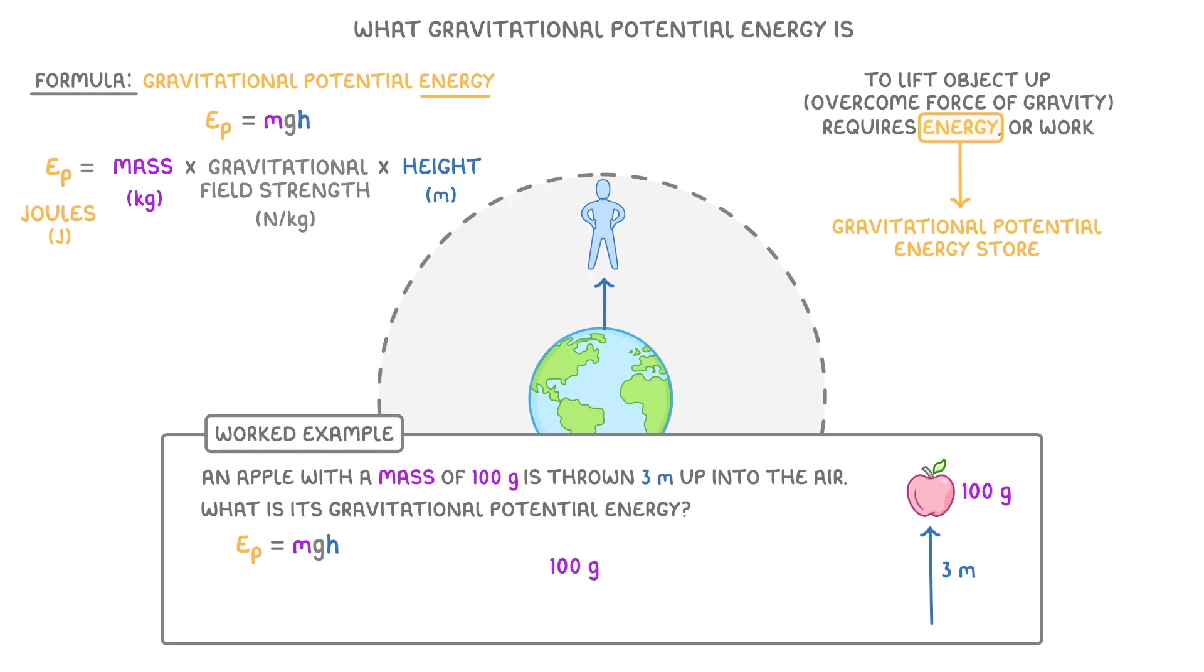We need to convert the 100 grams into kilograms by dividing it by 1000, because there are 1000 grams in a kilogram. Which gives us 0.1 kilograms.